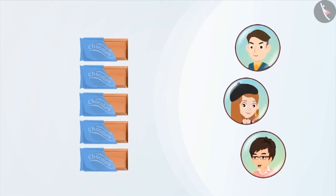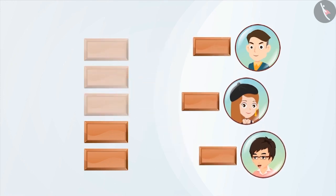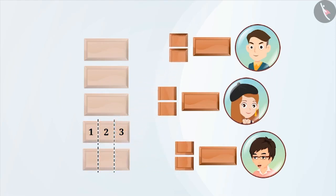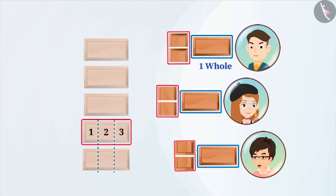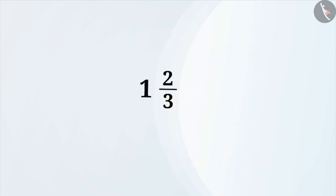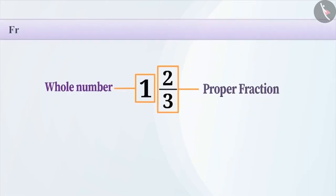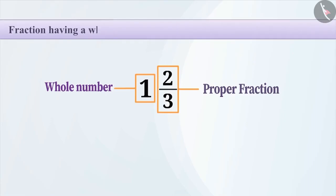There is another way to divide five chocolates among three people. First, we will give one whole chocolate to each person. The remaining two chocolates will be equally divided into three parts and two parts are given to each person. This way, each person has one whole chocolate and two parts out of three, which can be expressed as 1 and 2 thirds. In this fraction, there is a whole number and a proper fraction. Fractions having a whole number and a proper fraction are called mixed fractions.